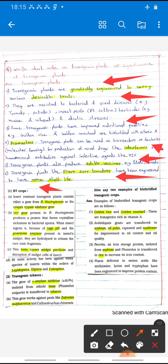These Bt crops are insect resistant transgenic plants that contain either gene of B. thuringiensis, B for Bacillus thuringiensis, or cowpea trypsin inhibitor gene. They contain specific gene which is called cry gene.